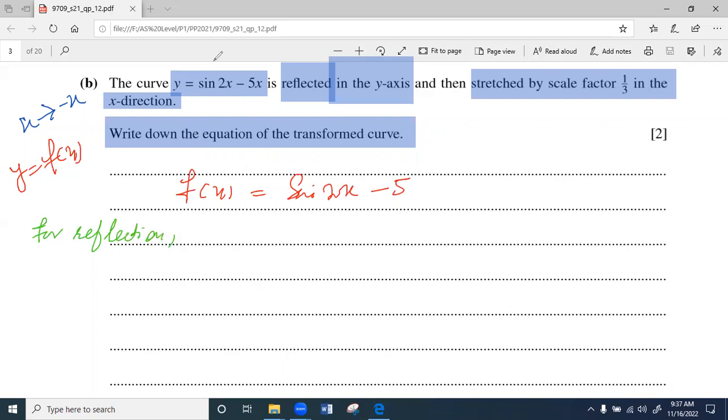For reflection, x will be changed with negative x. So sine 2, since x has to change sign, this will become negative 2x. And in the curve it was negative 5x, so minus 5, this x will now become negative x. So in this way, the reflection curve changing sign will be like this.